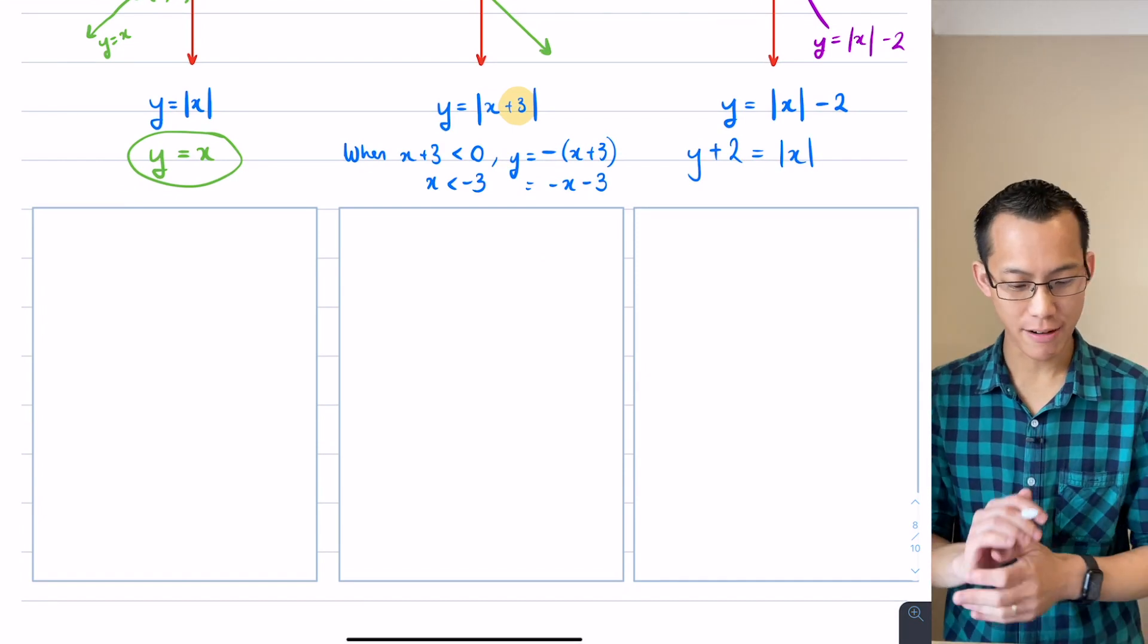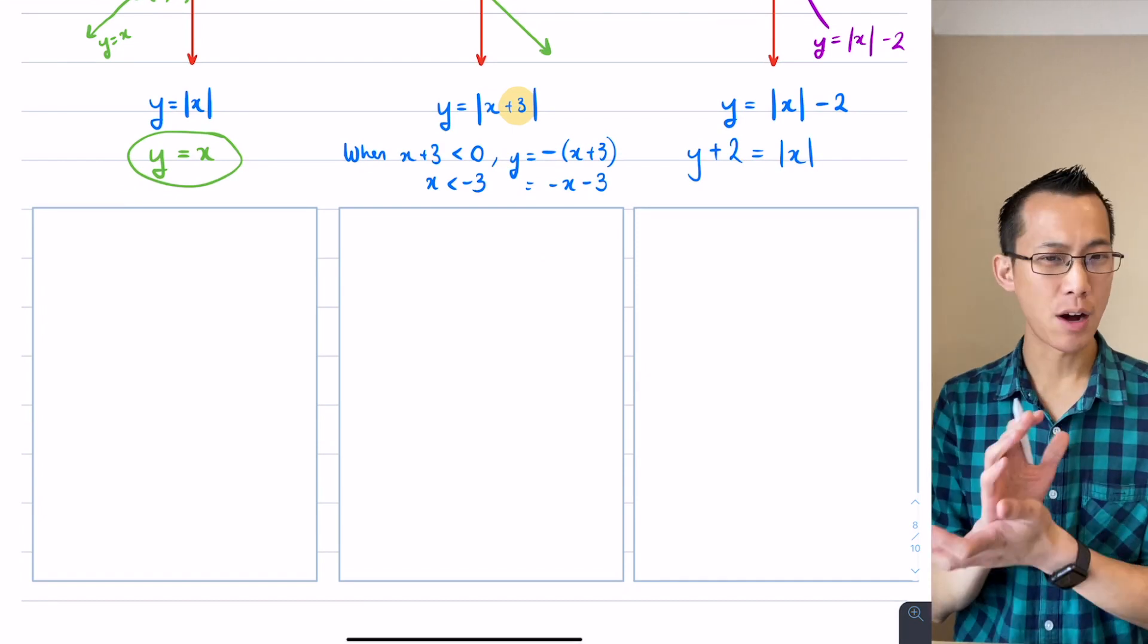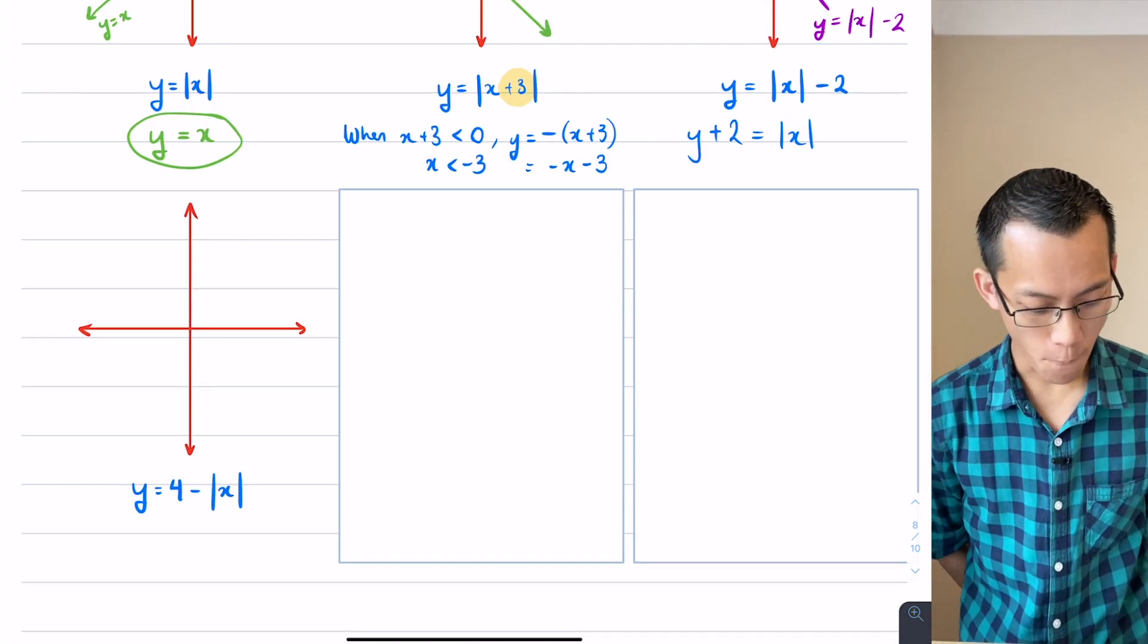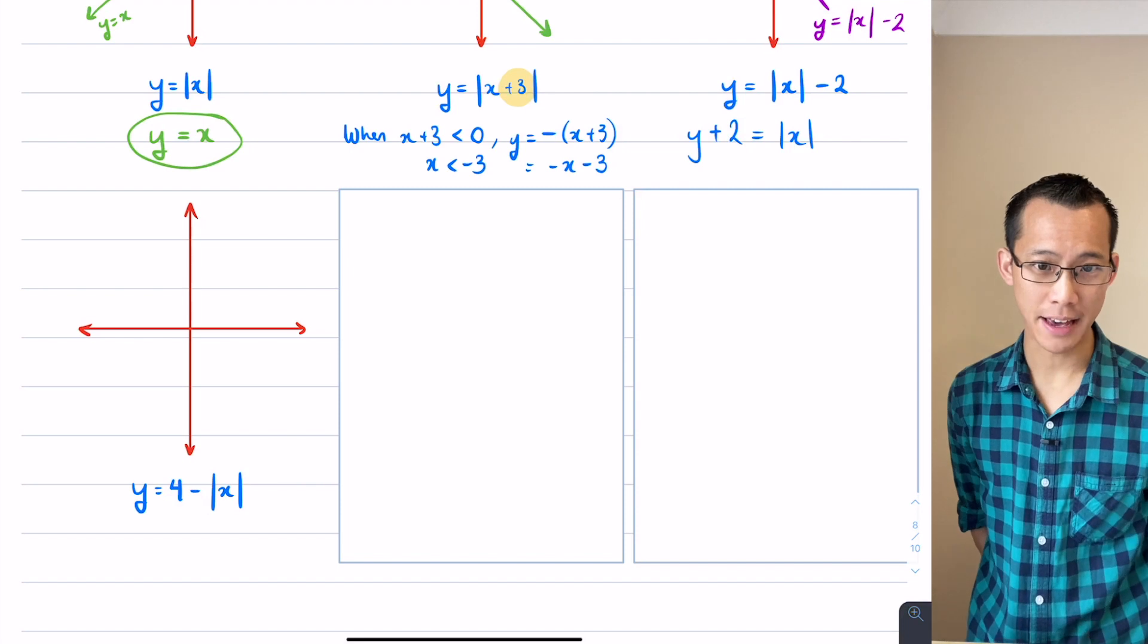Alright, so now we're going to hit the accelerator a little bit because I want you to start working on this more independently. This guy here, y equals 4 minus the absolute value of x.